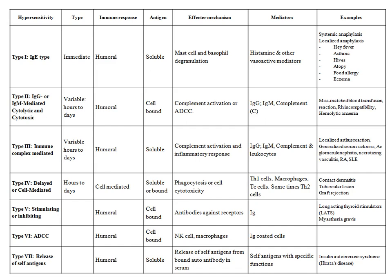Type 4, also known as delayed hypersensitivity, typically takes more than 72 hours. The immune response is cell-mediated. The antigen can be soluble or cell-bound. Phagocytes and cytotoxic cells are involved, along with Th1 cells, macrophages, cytotoxic T cells, and sometimes Th2 cells. Examples include contact dermatitis, tubercular lesions, and graft rejection.